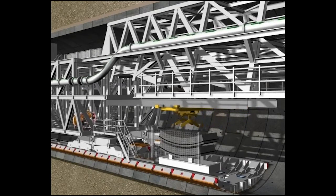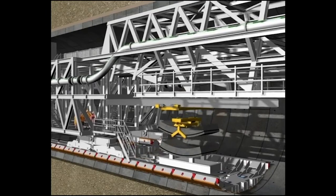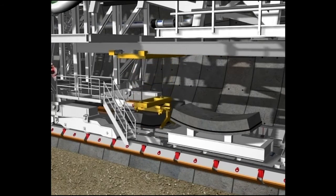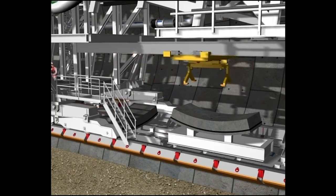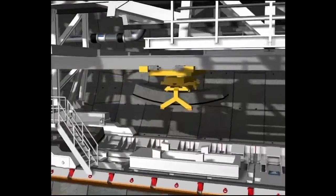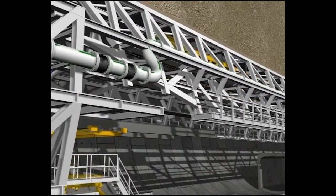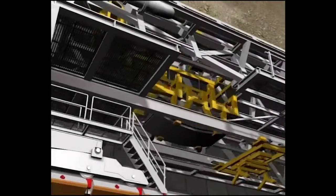With the transfer crane, the segments, which are supplied by the segment transport crane behind gantry one, are individually lifted, turned, and positioned on the segment feeder. The segments are continuously supplied by the segment transport crane.